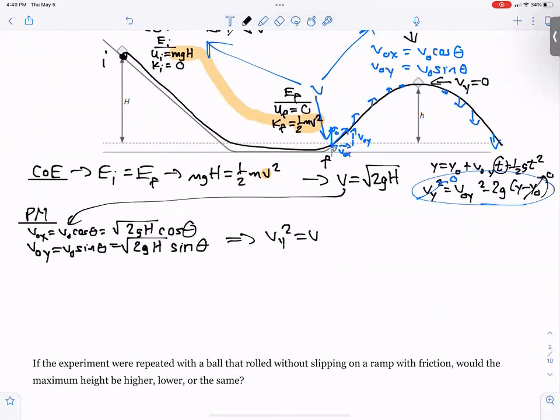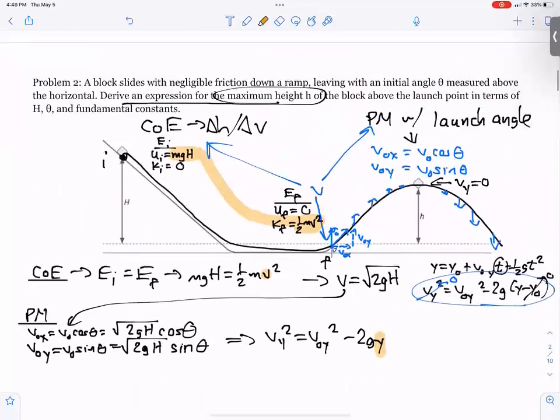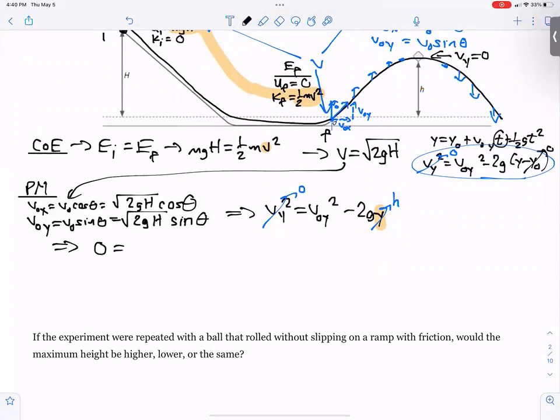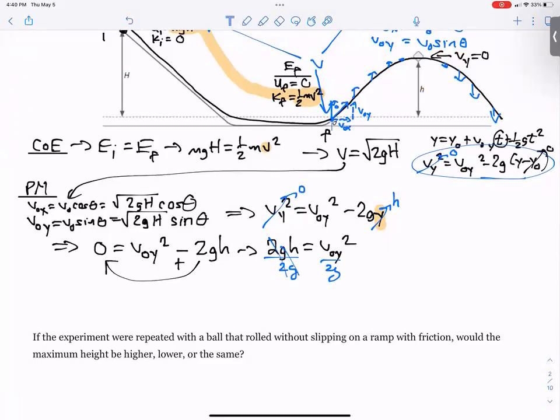So v y squared equals v naught y squared minus 2g y, and ultimately you're solving for y, that's your maximum height, h. So we can change the variable to an h, make sure that we zero that out. This becomes zero equals v naught y squared minus 2gh. Add this to the other side, and 2gh equals v naught y squared. Divide by 2g, and h maximum height is going to be v naught y squared over 2g.